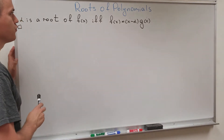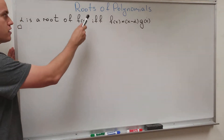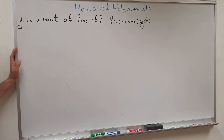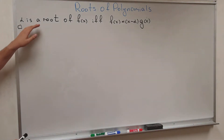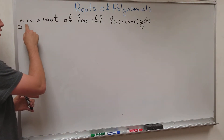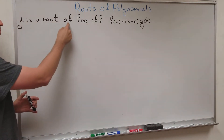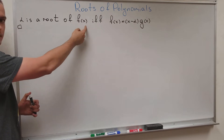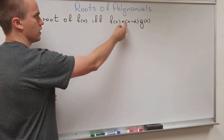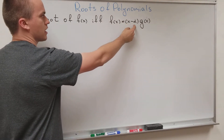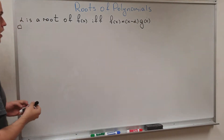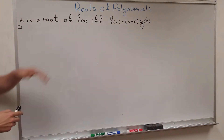Hello guys. In this video I want to discuss roots of polynomials and I want to prove the following statement: alpha is a root of some polynomial f(x) if and only if f(x) can be written as (x minus alpha) times g(x). And I want to prove this statement.